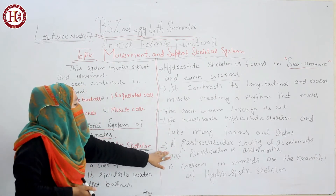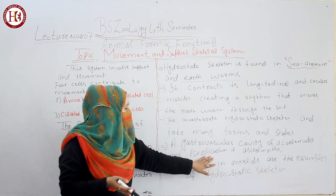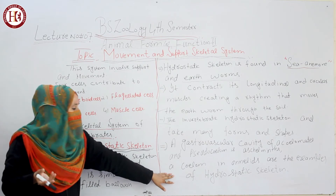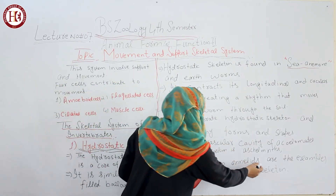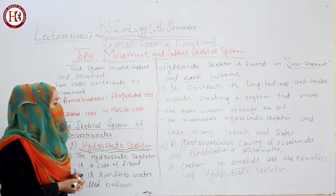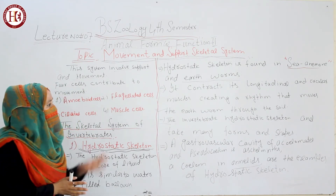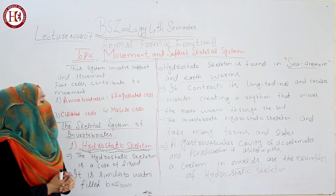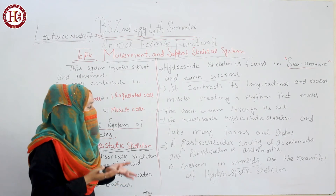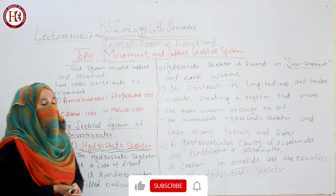The gastro-vascular cavity is found in acoelomates and pseudocoelomates, which have a false body cavity. Acoelomates have no true body cavity, while coelomates — such as annelids — have a true body cavity. These are the examples of organisms with a hydrostatic skeleton.